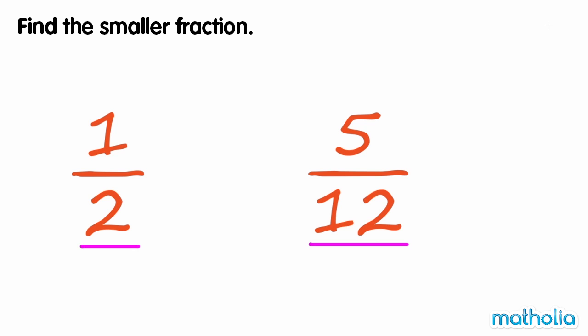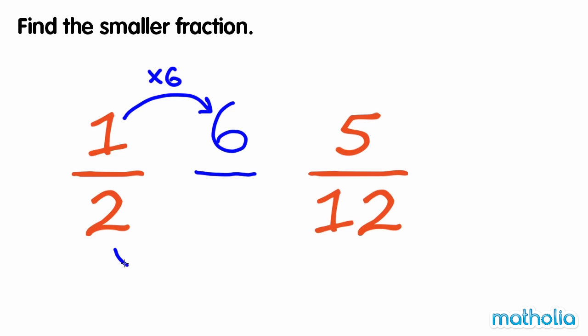We need to find an equivalent fraction of one-half where the denominator is twelve. Two multiplied by six equals twelve. Let's make an equivalent fraction of one-half by multiplying the numerator and denominator by six. One times six is six, and two times six is twelve. So six-twelfths is an equivalent fraction of one-half.